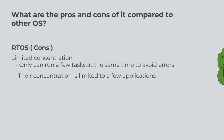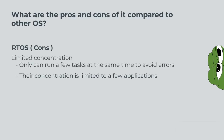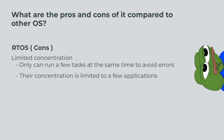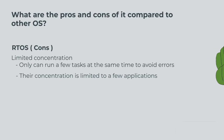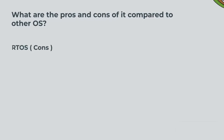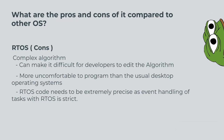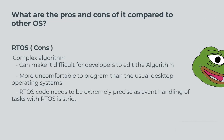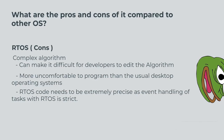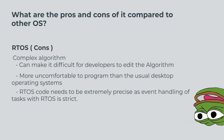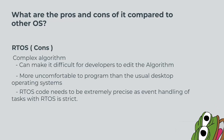RTOS cons: limited concentration. RTOS can only run a few tasks at the same time to avoid errors — their concentration is limited to a few applications. RTOS cons: complex algorithm. This can make it difficult for developers to edit the algorithm, making it more uncomfortable to program than usual desktop operating systems. RTOS code needs to be extremely precise as event handling of tasks with RTOS is strict.